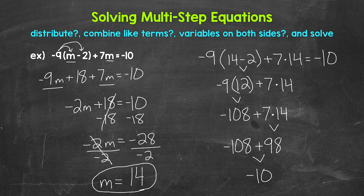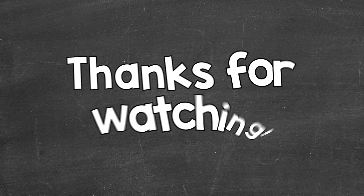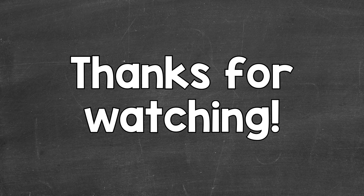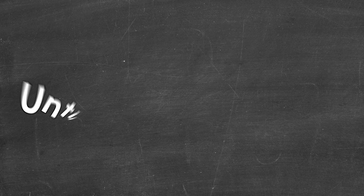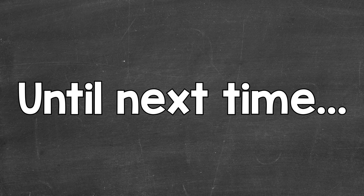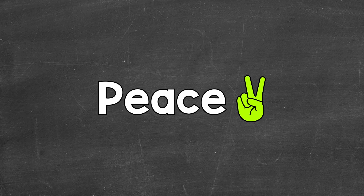So there you have it — that's how to solve a multi-step equation that involves using the distributive property and combining like terms. I hope that helped. Thanks so much for watching. Until next time — peace.